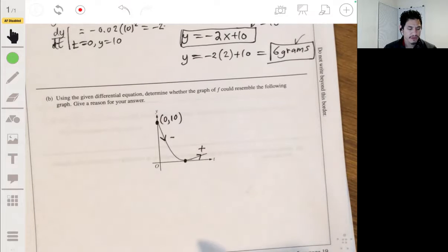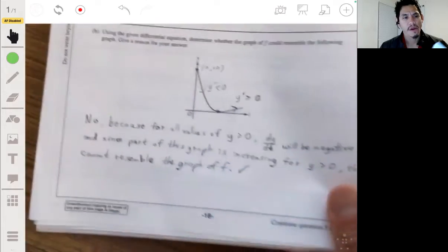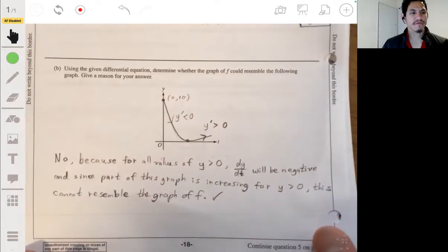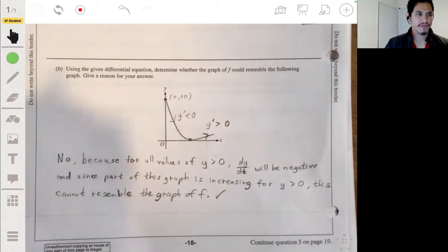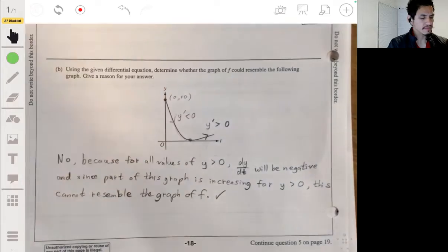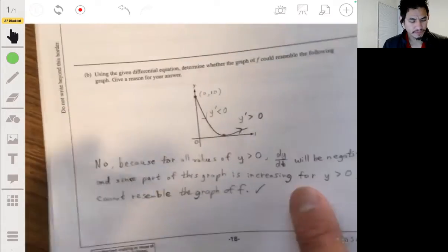This should always have a negative slope. But since part of this graph has a positive slope, or part of it's increasing, then this wouldn't make sense. So this could not resemble the graph of f.